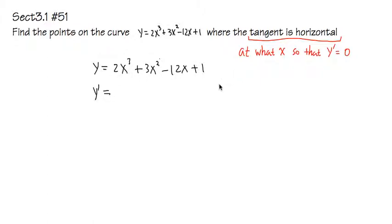I can just use the power rule right away. I bring the exponent to the front. 2 times 3 is 6x to the second power. Then I add the derivative of 3x squared, which is 6x. The derivative of negative 12x is minus 12. Derivative of 1 equals 0. So this is y prime.